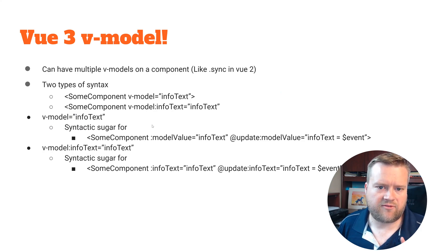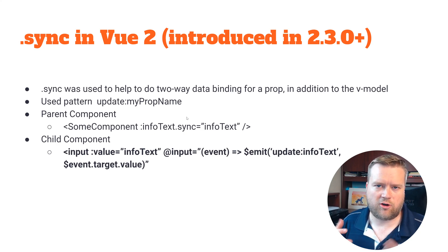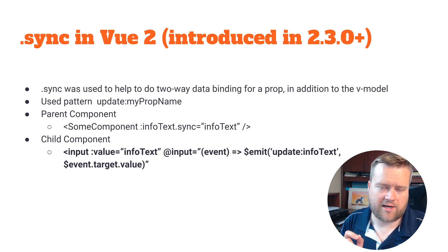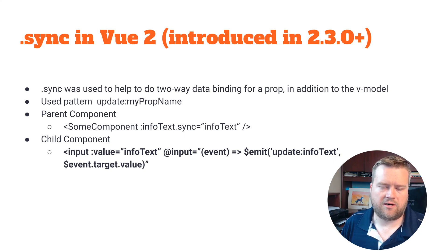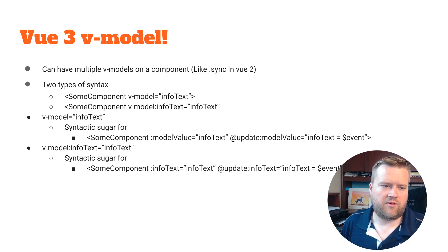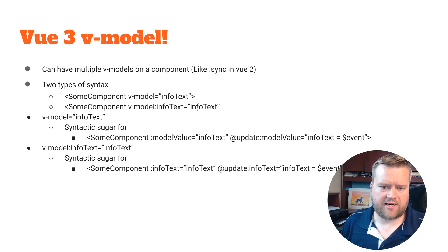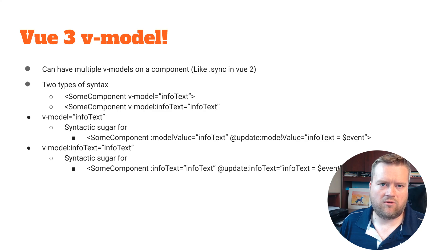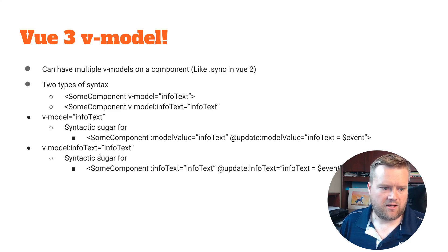Now, Vue 3 V model — this is a little different. In Vue 3 you have two types of syntax: V-model which implicitly passes info-text, or V-model colon info-text equals info-text. If you just do V-model equals info-text, since it's syntactic sugar for update model-value, the default prop name is 'modelValue'. You then handle the emitted event accordingly.